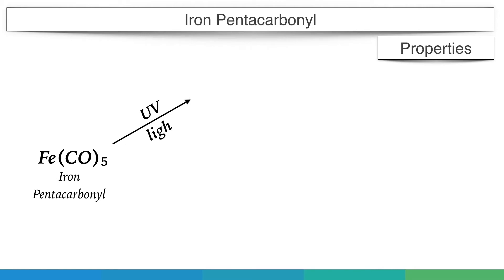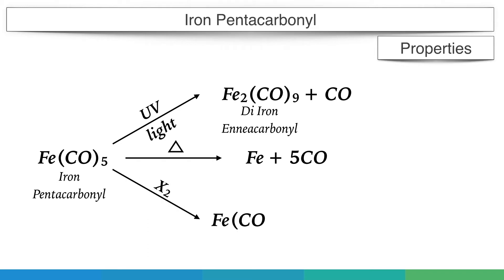On irradiation with ultraviolet light, it forms di-iron enneacarbonyl. On heating to about 400 degree Kelvin, it undergoes thermal decomposition. It reacts with halogens in non-aqueous solvents with the formation of unstable addition compounds which readily decompose with the liberation of carbon monoxide and formation of stable tetracarbonyl halide.